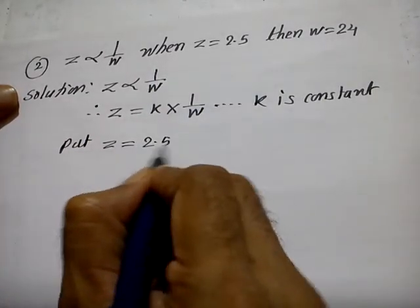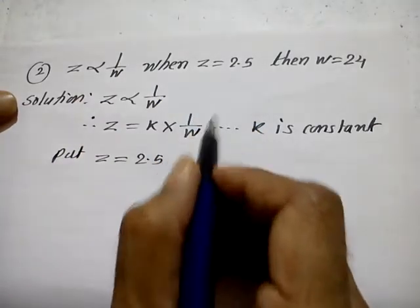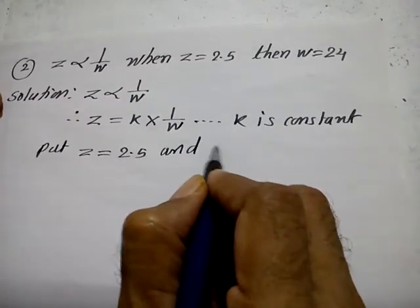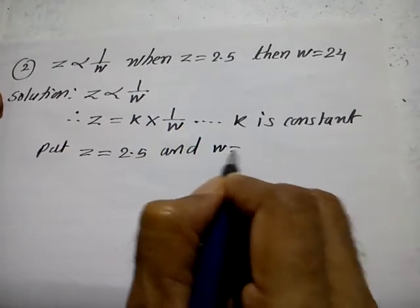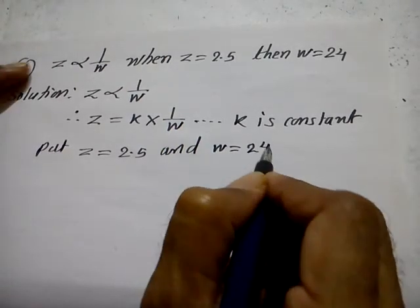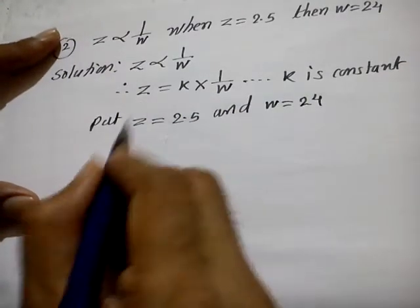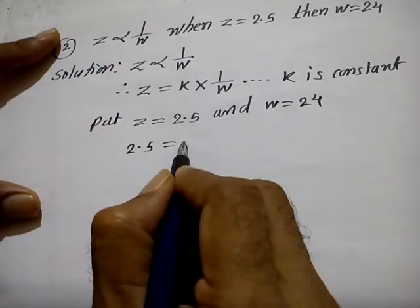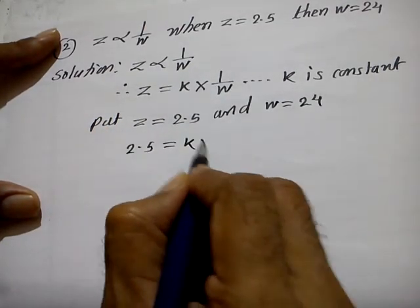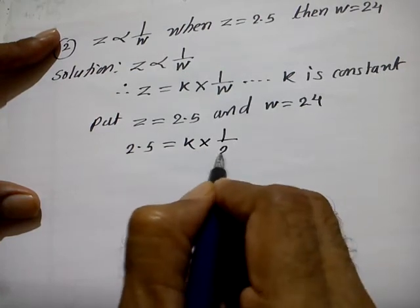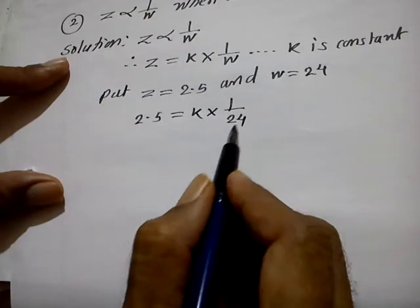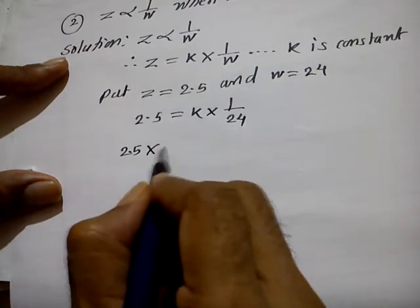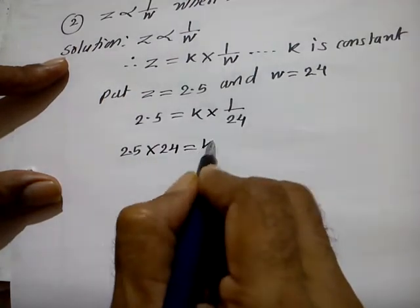Put the values: z is equal to 2.5 and w is equal to 24. So 2.5 is equal to K into 1 upon 24. Therefore, 2.5 into 24 is equal to K.